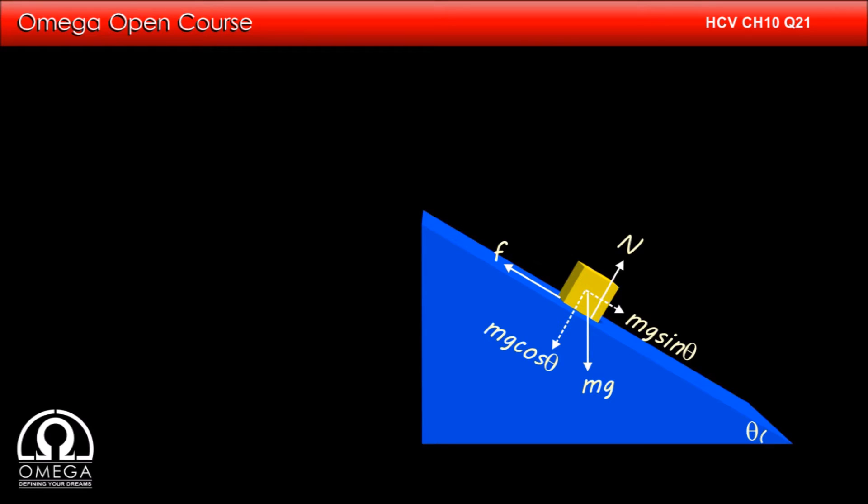Since the block is sliding down with a uniform speed, its acceleration is zero. This implies the net force on the block along the incline is zero. Thus, the friction force must be equal to the component of gravity along the incline, or F is equal to Mg sin theta.